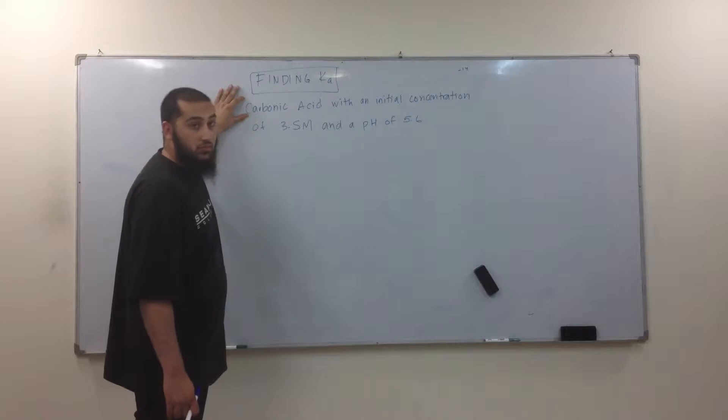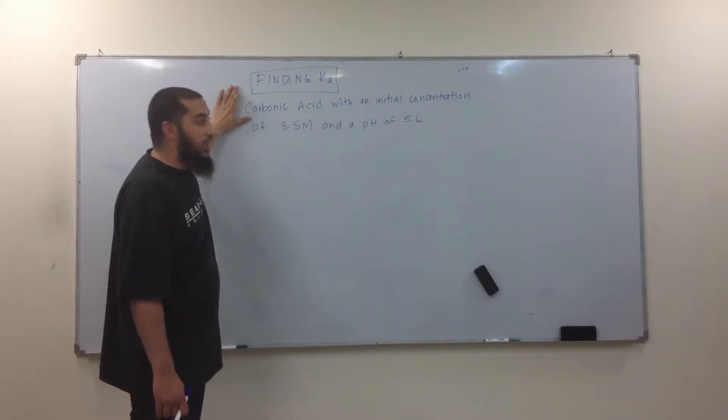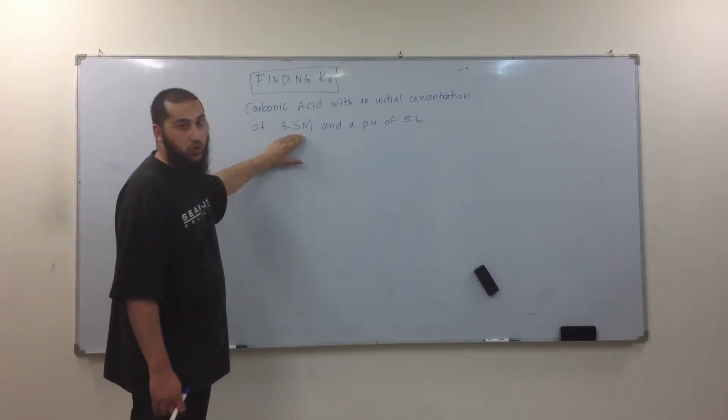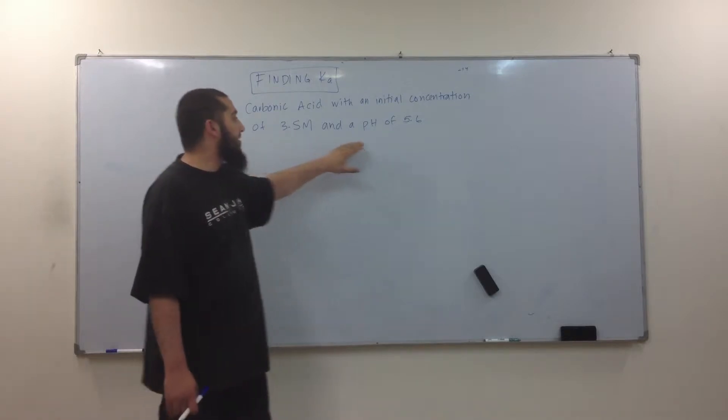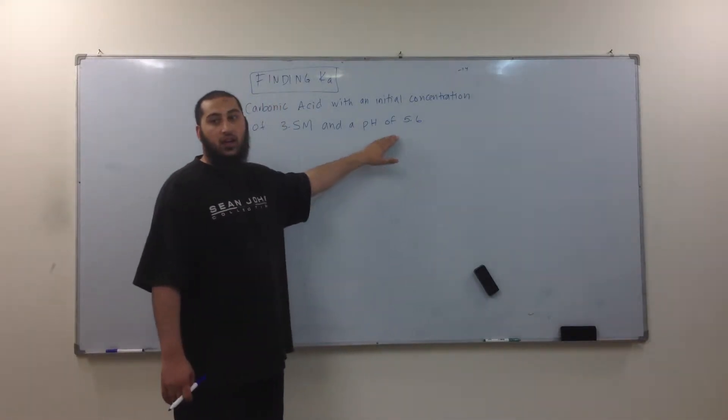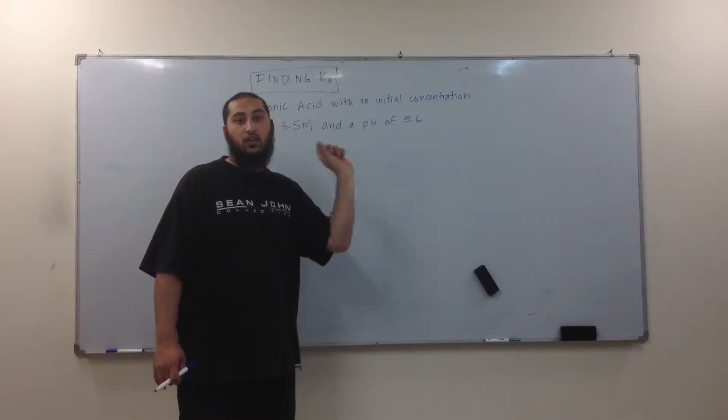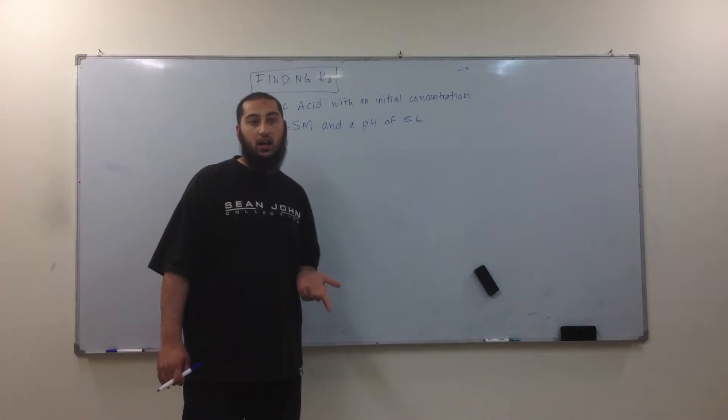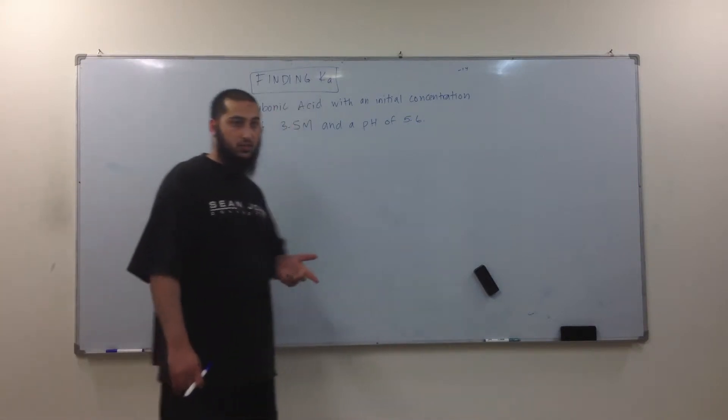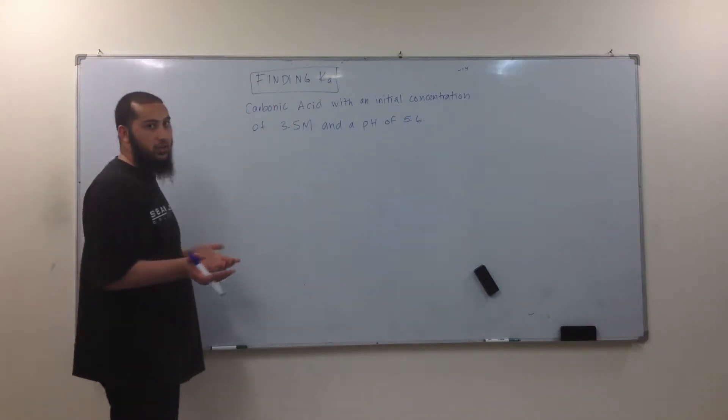So we have carbonic acid, and we want to find the Ka of that. They gave us the initial concentration, which was 2.5. And they said that the final pH was 5.6. pH has to do with the concentration of what? The H3O+. So first thing is what? Write the equation.